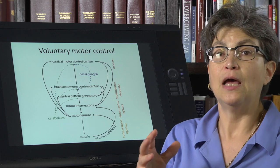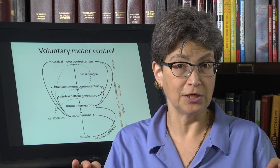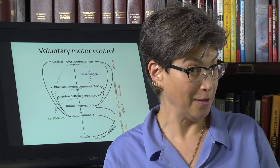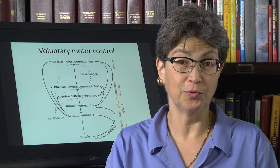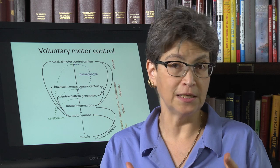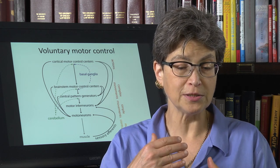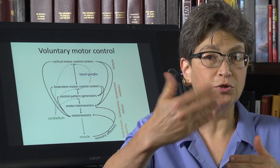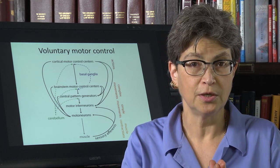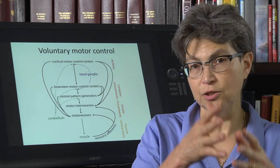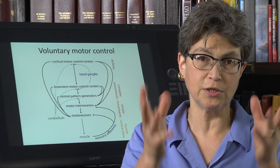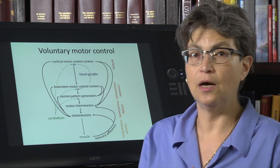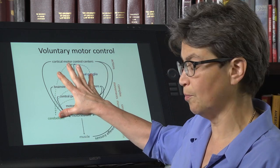The basal ganglia is involved in action selection — of the many actions one could make right now, what action should one make? Should she smile or frown, look left or look right? That is the output of the basal ganglia. Moreover, the basal ganglia is very useful in chaining together sequential complex movements, such as moving your eyes across somebody's face to identify who they are. These are organized by both the cerebellum and the basal ganglia.